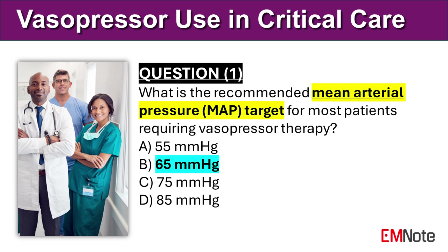The correct answer is B. The recommended mean arterial pressure (MAP) target for most patients requiring vasopressor therapy is 65 millimeters of mercury.